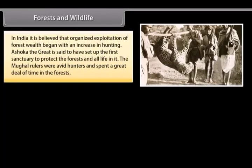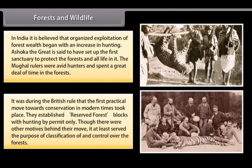In India, organized exploitation of forest wealth began with an increase in hunting. Ashoka the Great is said to have set up the first sanctuary to protect the forests and all life in it. The Mughal rulers were avid hunters and spent a great deal of time in the forests. It was during British rule that the first practical move towards conservation in modern times took place. They established reserved forest blocks with hunting by permit only, which at least served the purpose of classification and control over the forests.